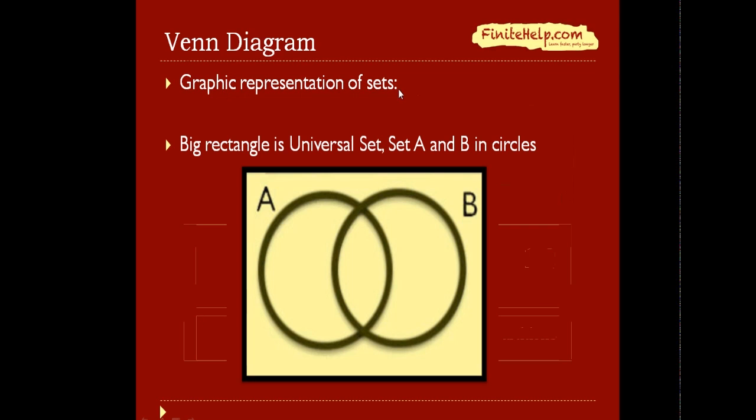A Venn diagram is the graphic representation of sets. Here we can have an example of a Venn diagram. The big rectangle represents the universal set, and here's set A and set B represented by circles.